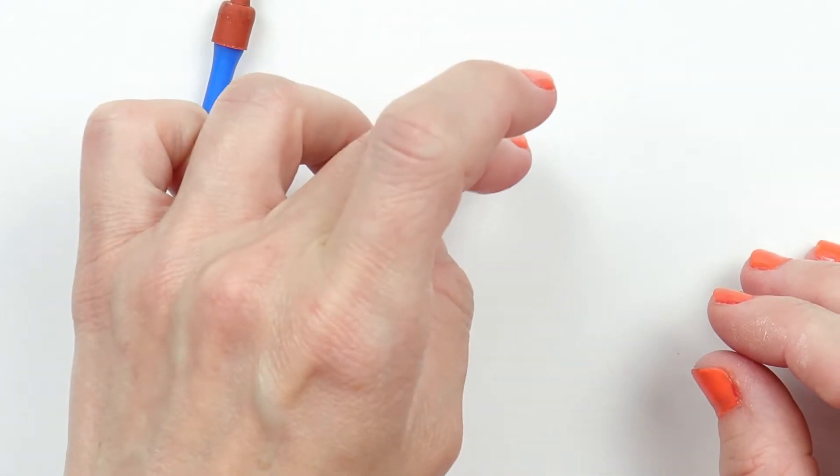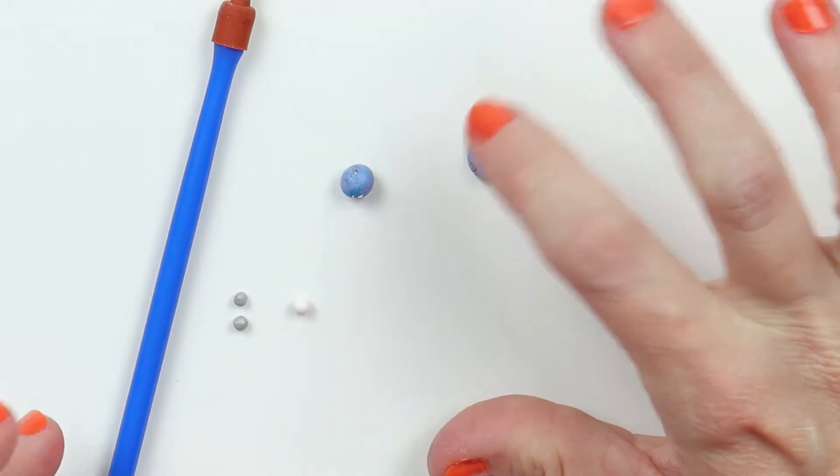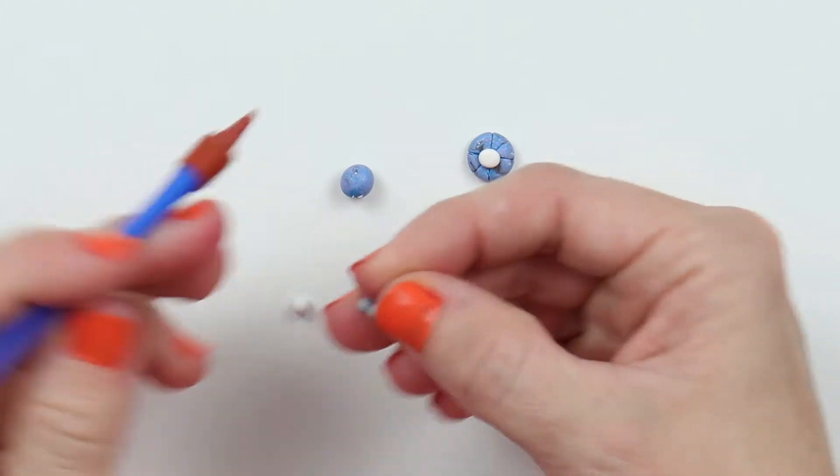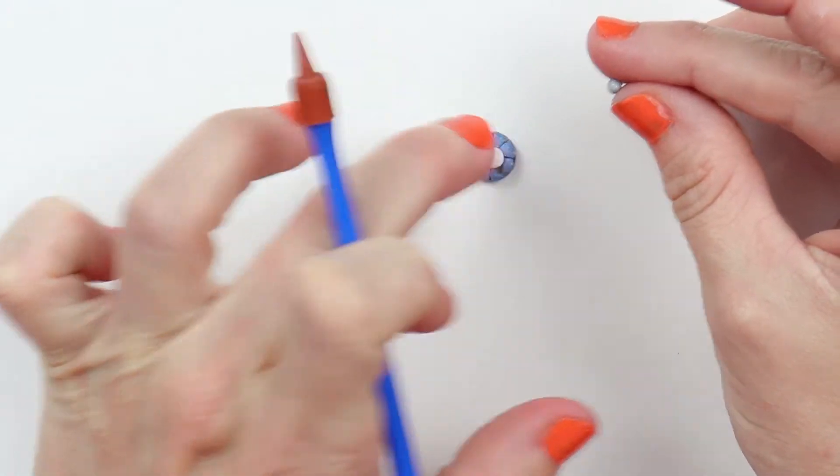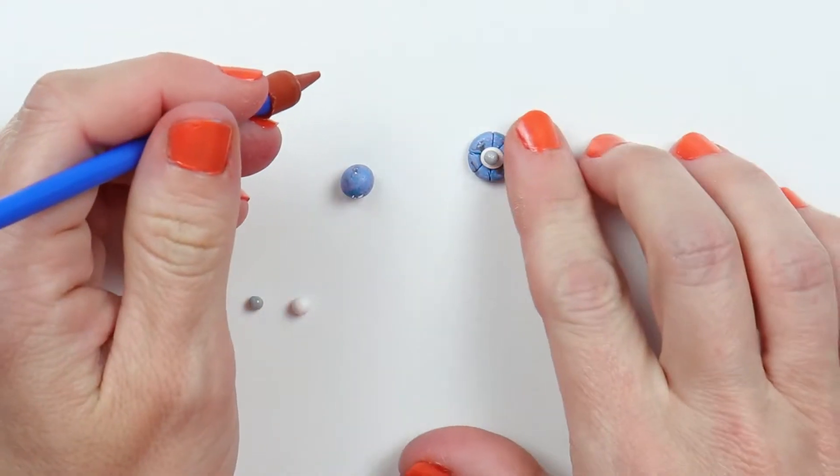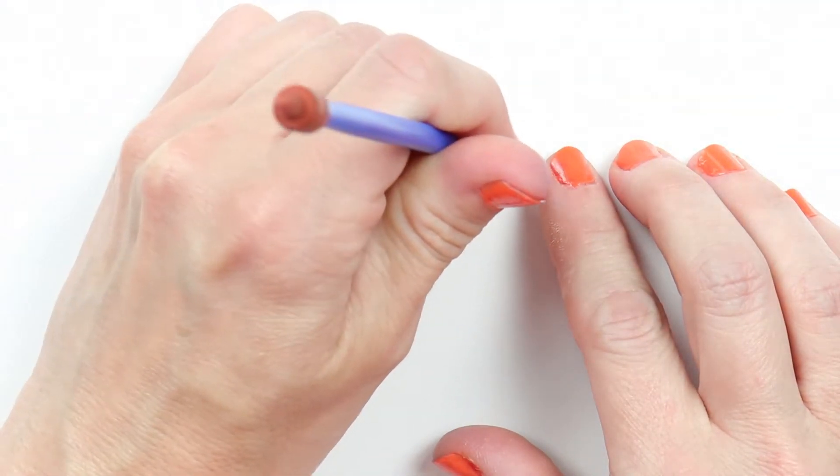Place a ball of white clay on top and press it flat, and then place a ball of gray clay on top of that. Use a tool to make a hole in the middle.